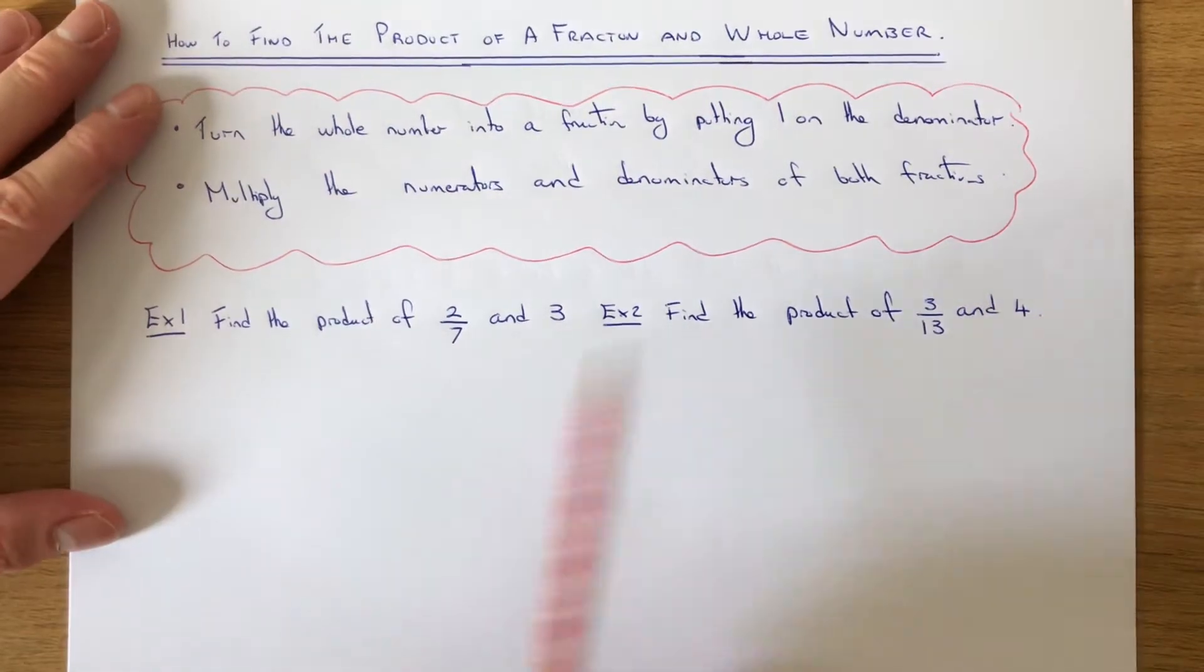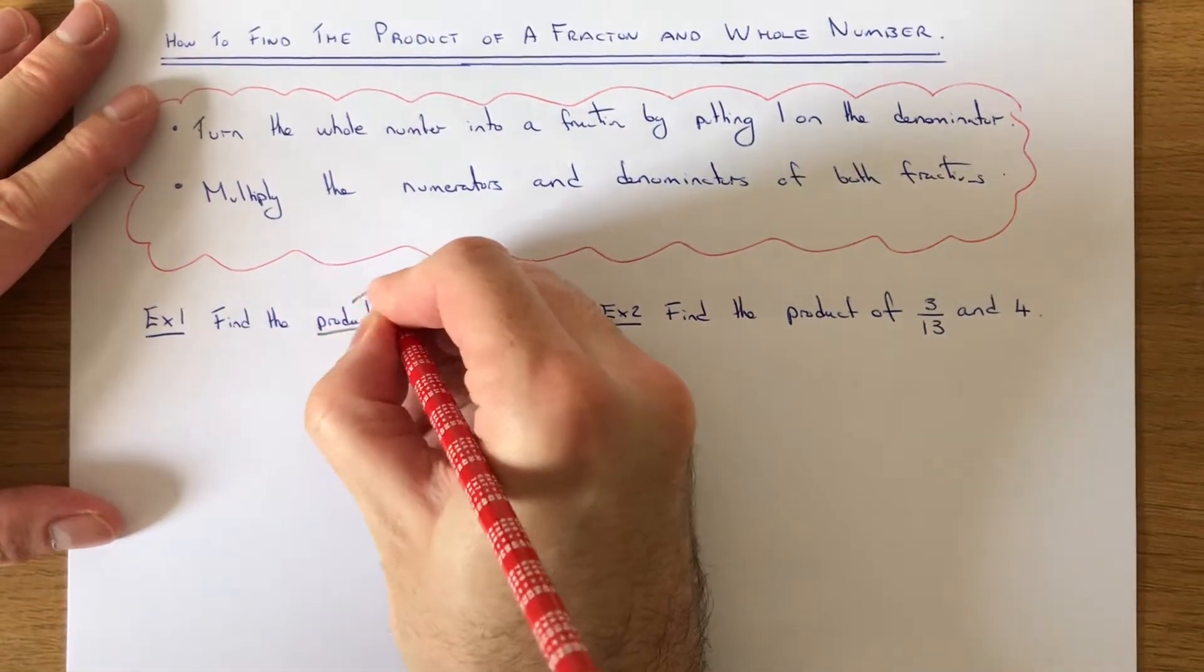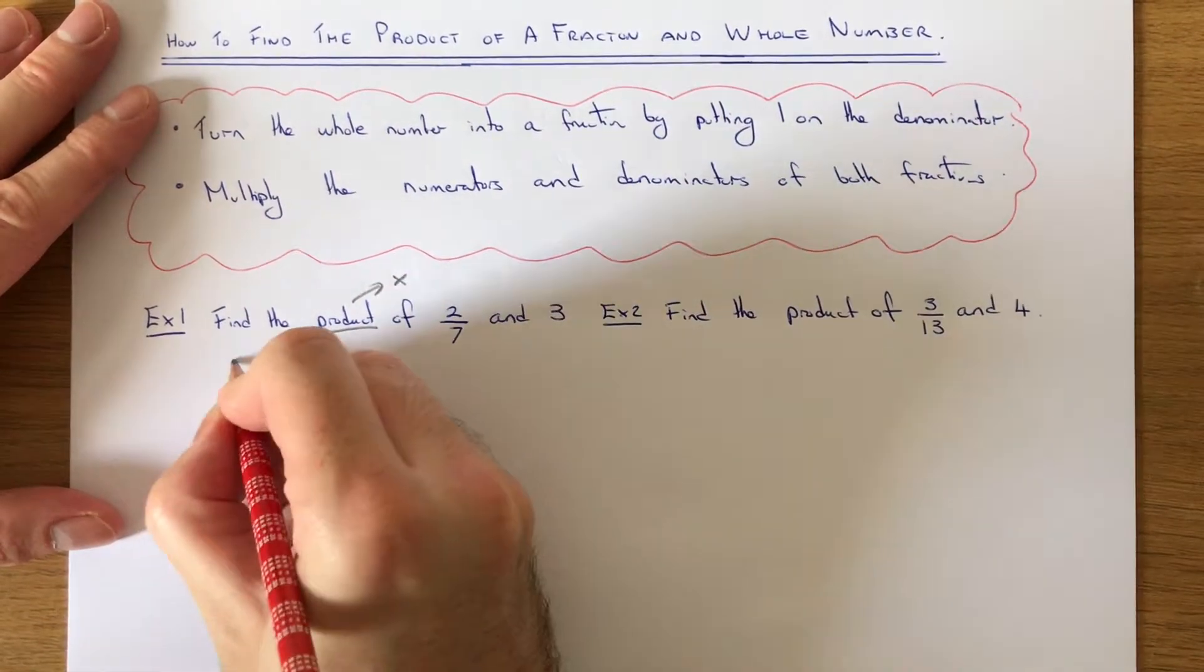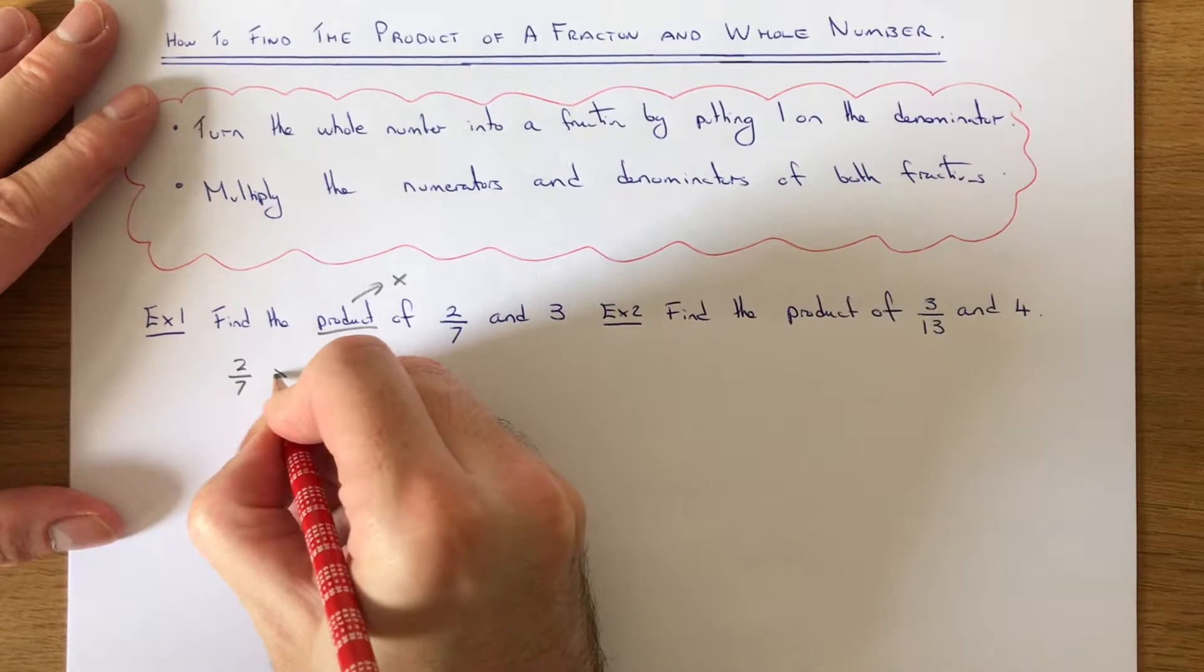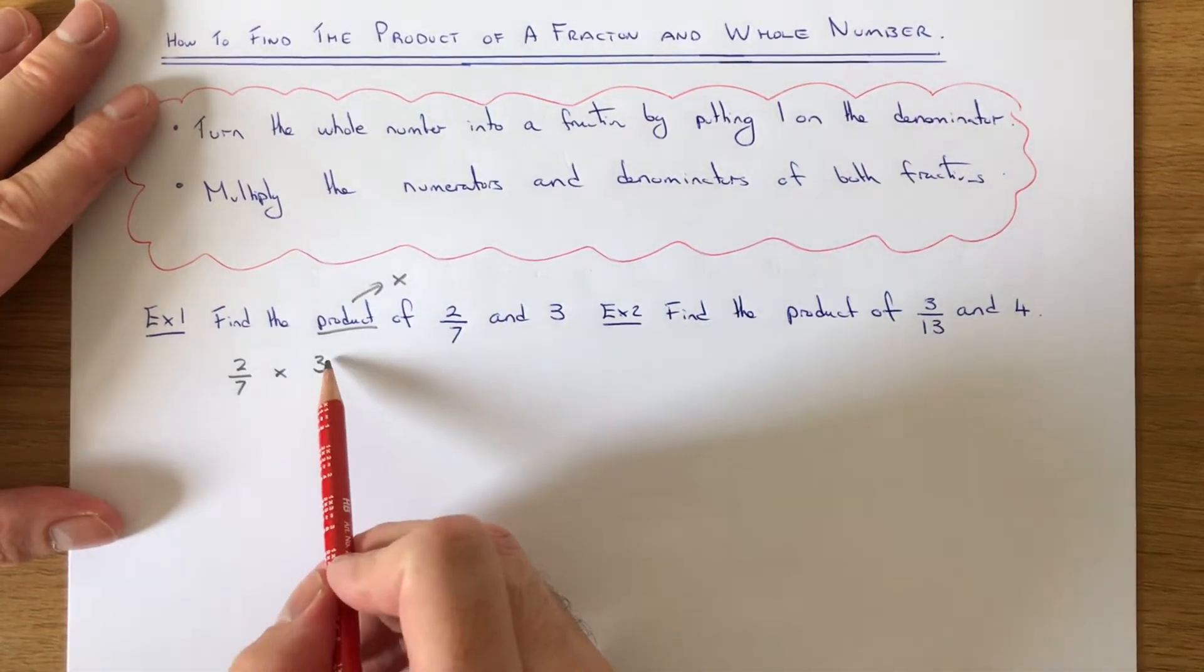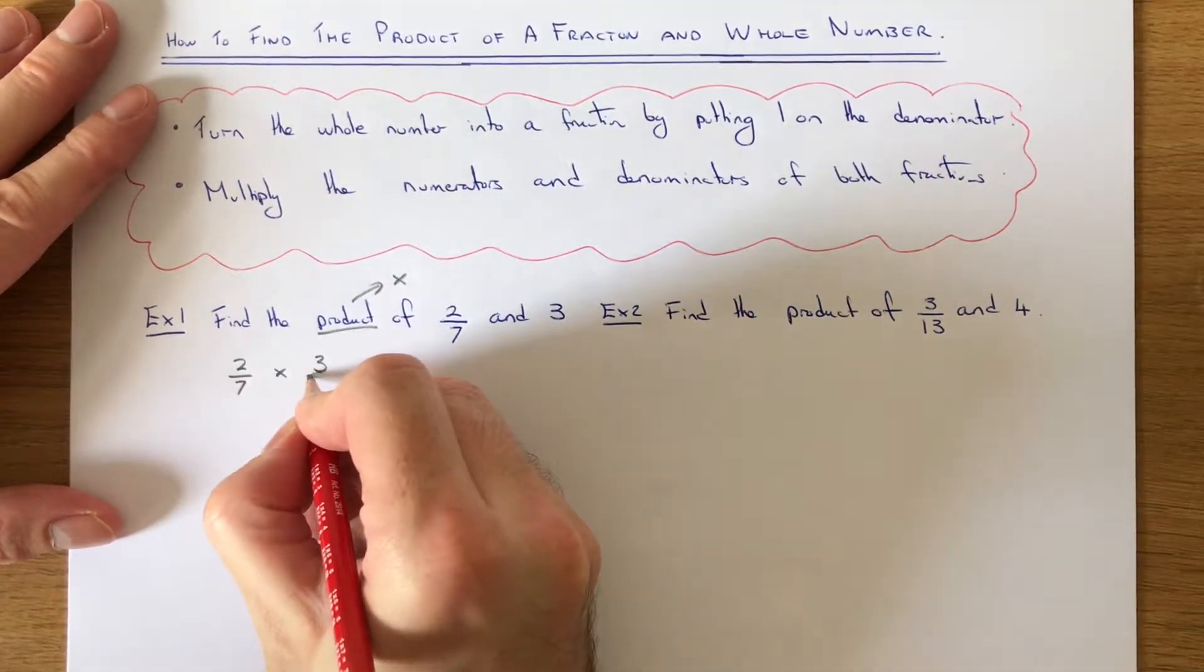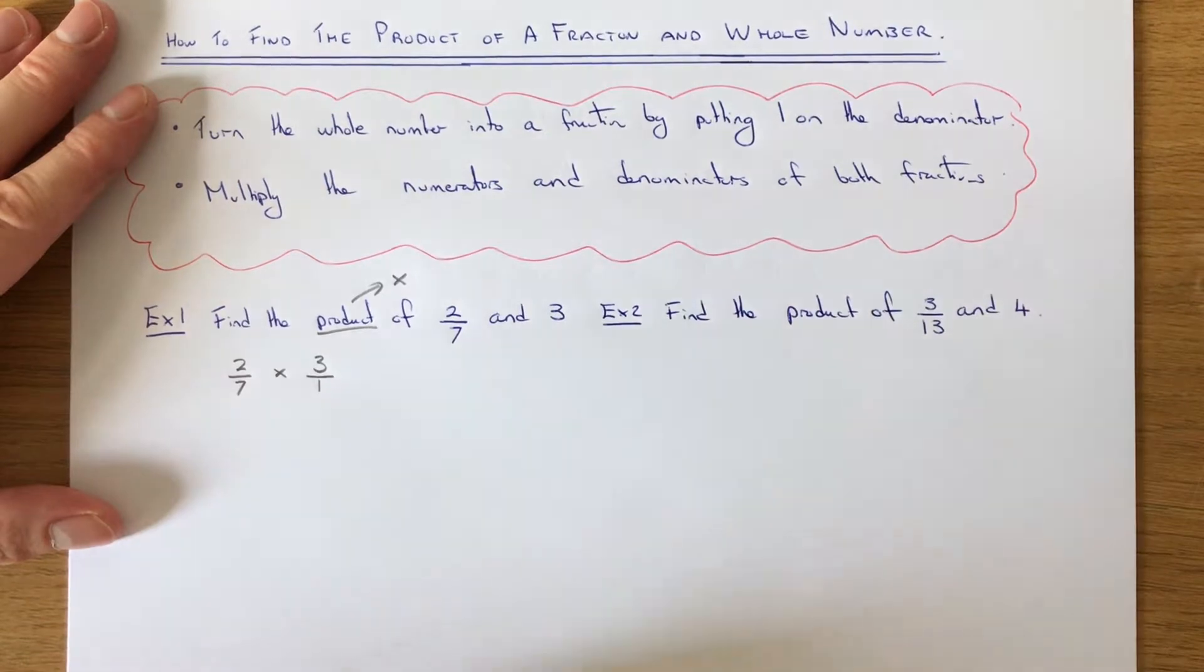Let's have a look at example 1. We've got to find the product of 2/7 and 3. Product means we need to multiply the fraction by the whole number. What we can do next is change this whole number into a fraction by putting 1 on the denominator of the fraction.